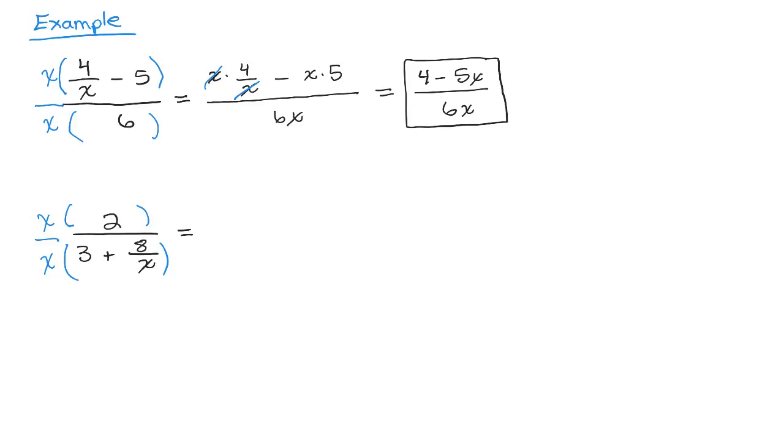All right. Let's do the same thing. x times 2 is just 2x. Now, see if we could do this without the middle step. See if you could do it in your head. What's x times 3? That's 3x. Now, what happens when you multiply x times 8 over x? Can you see what's going to happen when you multiply x times 8 over x? Those x's are going to cancel. So you're going to get plus 8. And there's your answer.